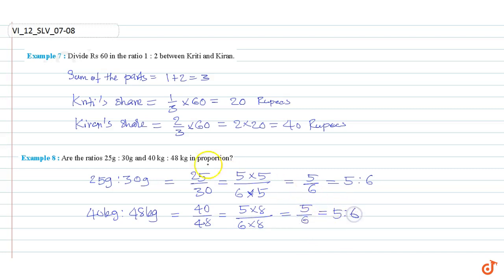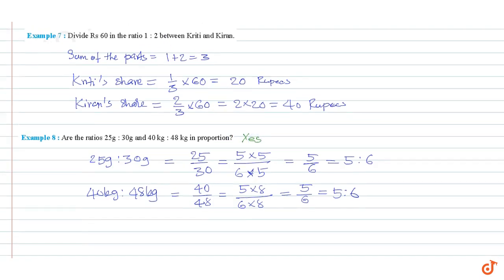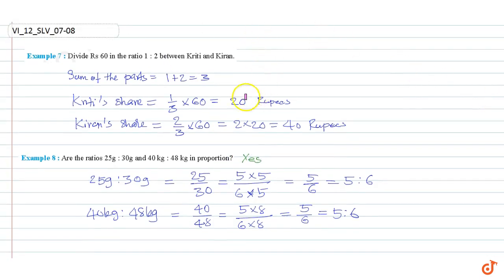Therefore, the ratios 25 gram is to 30 gram and 40 kg is to 48 kg are in proportion. These are our answers.